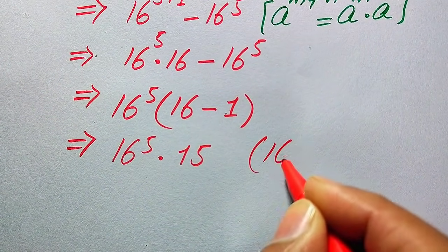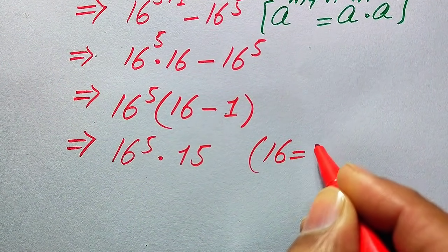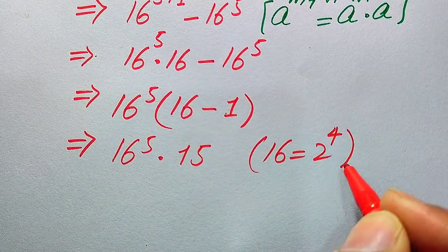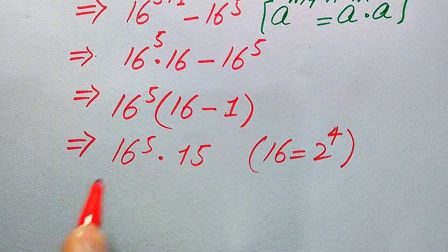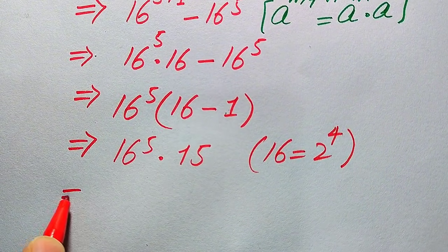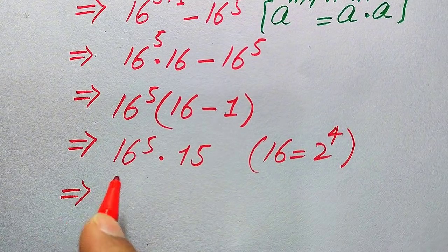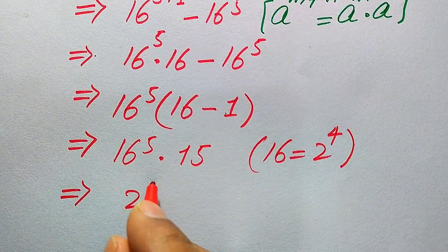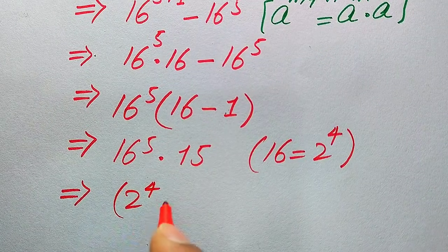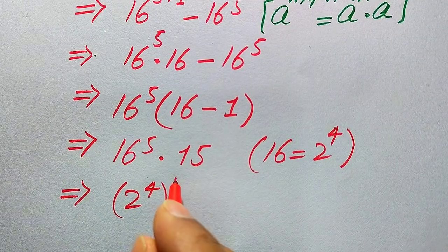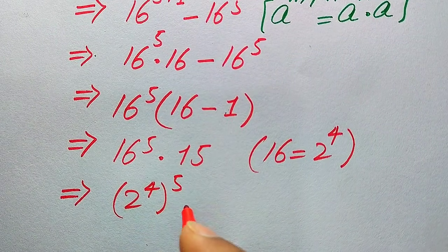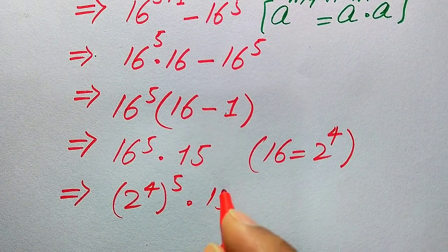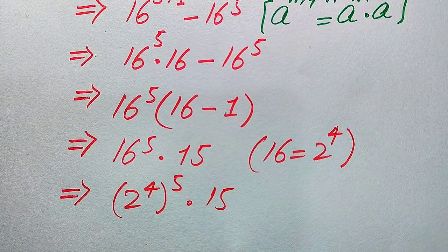We know that 16 equals 2 to the power of 4, so we replace the base 16 with 2 to the power of 4. The term becomes 2 to the power of 4, with a whole power of 5, all multiplied by 15.